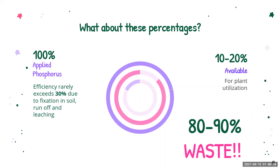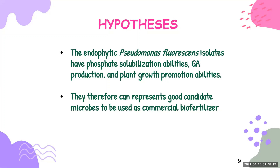To tackle this problem, exploring alternative forms of nutrient application and utilization is of vital importance. Therefore, the researchers hypothesized the following points: endophytic Pseudomonas fluorescens isolates have phosphate solubilization abilities, gluconic acid production, and plant growth promotion abilities, and therefore can represent good candidate microbes to be used as commercial biofertilizers.